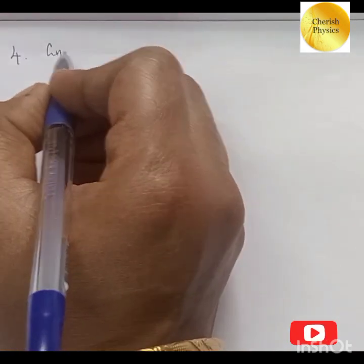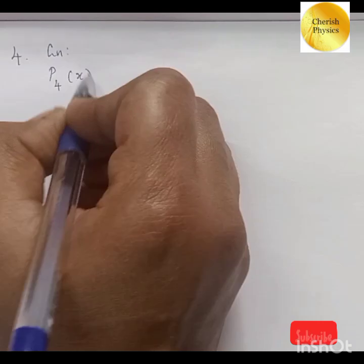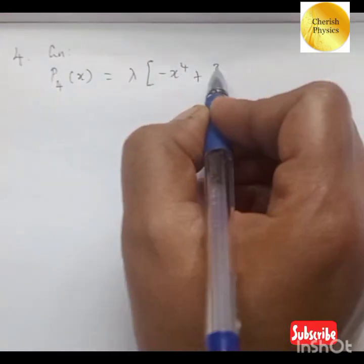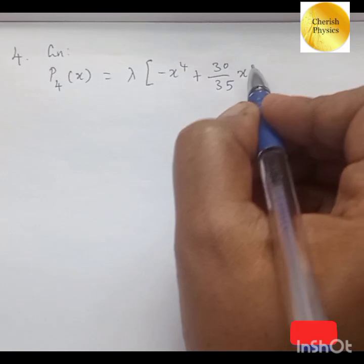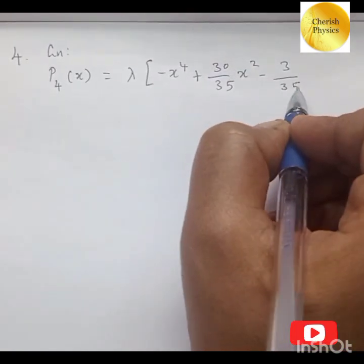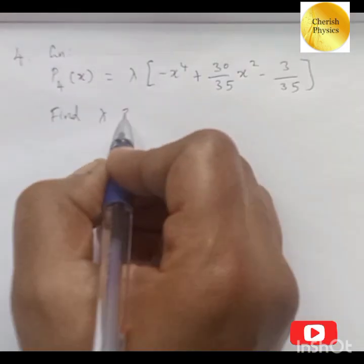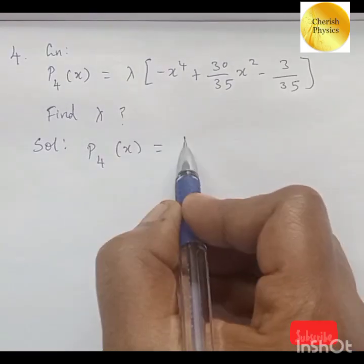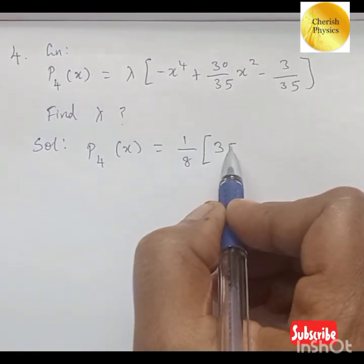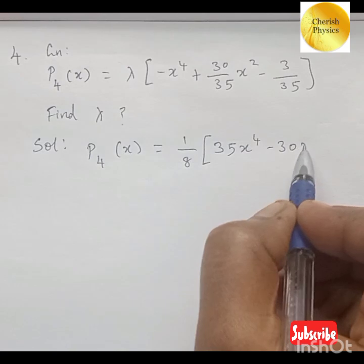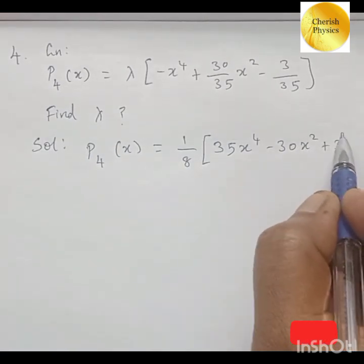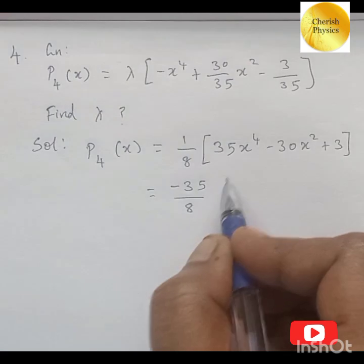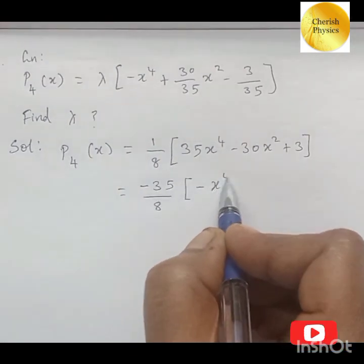Fourth question: given P₄(x) = lambda·(x⁴ + 30/35 x² − 3/35), find lambda. We know that P₄(x) = (1/8)(35x⁴ − 30x² + 3). If we take minus 35 as common, the terms inside the bracket match the given expression, so lambda can be identified.